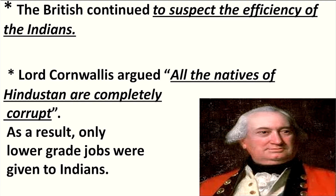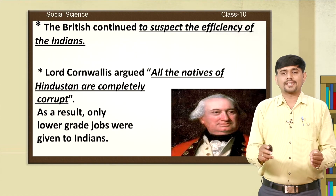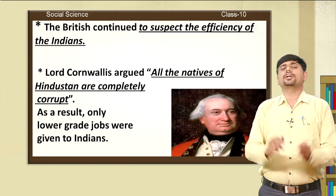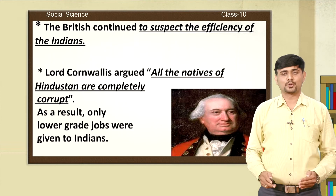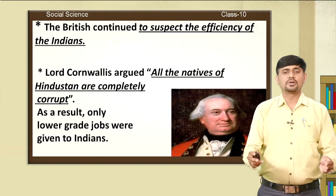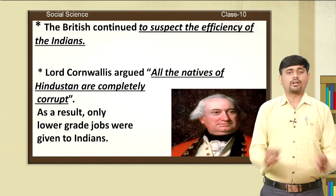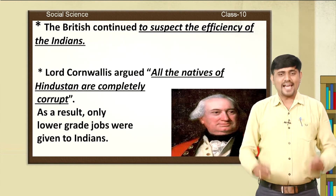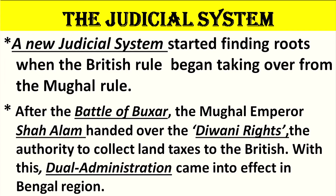Why did the British suspect the efficiency of the Indians? Though competitive examinations were started by Lord Cornwallis, the majority of Indians were not qualified — they were not able to gain good rankings. Moreover, small officials as well as Jamindars were corrupt under the British East India Company authority. Therefore, Lord Cornwallis argued that all the natives of Hindustan were completely corrupt. As a result, only lower grade jobs were given to the Indians.